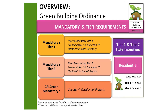This slide provides an overview of the mandatory and tier requirements. For Cal Green mandatory, projects are subject to chapter four for residential projects, and the provisions within this chapter are for those as applicable to the scope of work. For tier one, projects must meet the mandatory tier one prerequisites and minimum electives in each category, and must also meet the Cal Green mandatory requirements. For tier two, projects must meet mandatory tier two prerequisites and minimum electives in each category. The tier one and tier two state instructions for the tiers are located in the appendix.